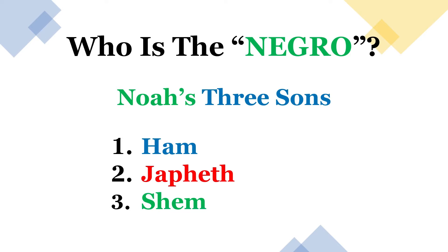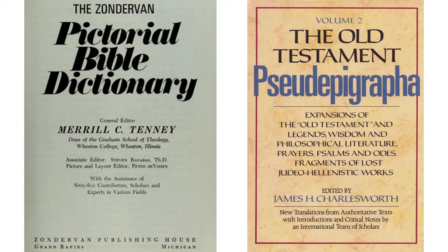In order to understand the story of the Negro, you have to understand the story of Noah's three sons — Ham, Japheth, and Shem. We're going to get the information from two sources: the Zondervan Pictorial Bible and the Old Testament Pseudepigrapha, which is the book that contains the missing books of the Bible. The conventional Bible you have now is missing a lot of books, and these have come back in the form of the Pseudepigrapha, released to the Most High's chosen people, the Negroes.